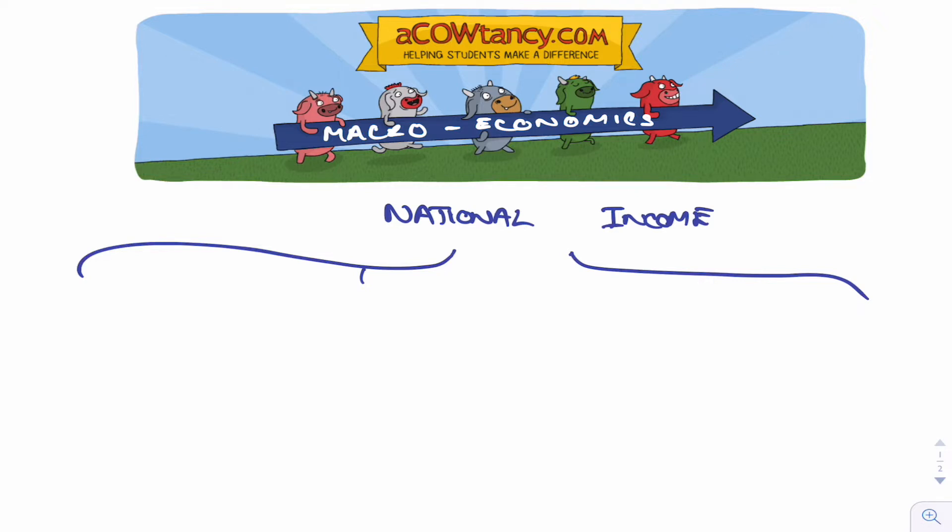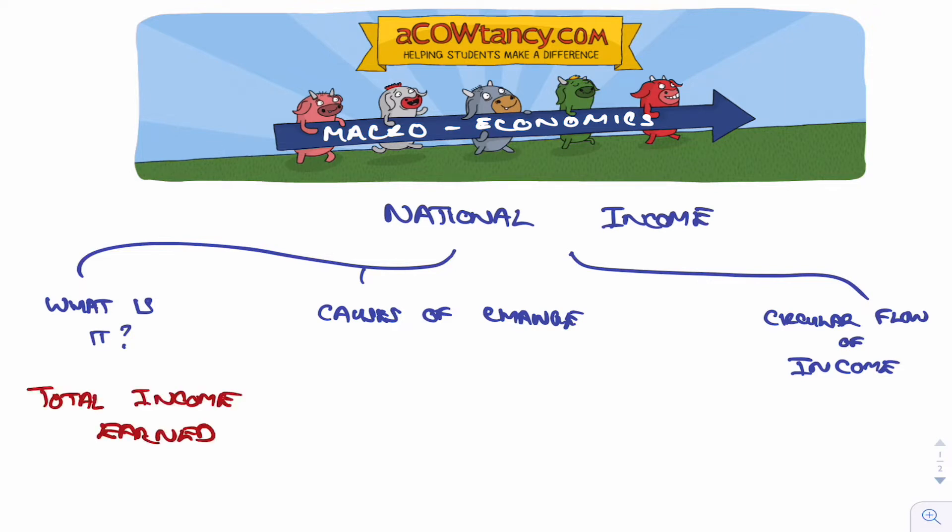Hey everybody, we're now looking at national income in macroeconomics. The things we're going to look at are what is it, the causes of change in national income, and something called the circular flow of income. So straight away, what is it? It's the total income earned by the providers of factors of production, but just think of it as the total income earned.